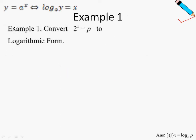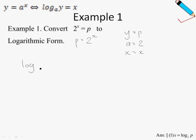The easiest way to do your conversion is to identify what is your y, your a, and your x. In this example, I'm going to rewrite the equation in a different way — I'll flip it around. Comparing this with the standard form, we can identify that y is p, a is 2, and x is just x. So to convert to the logarithmic form: log base a — since a is 2, I replace it with 2 — of y, which is p, equals x. That is the answer.